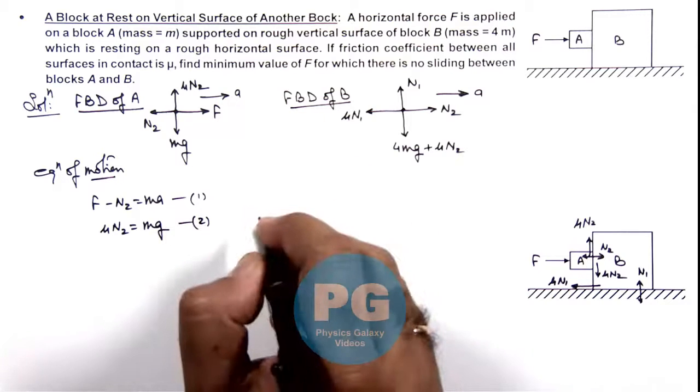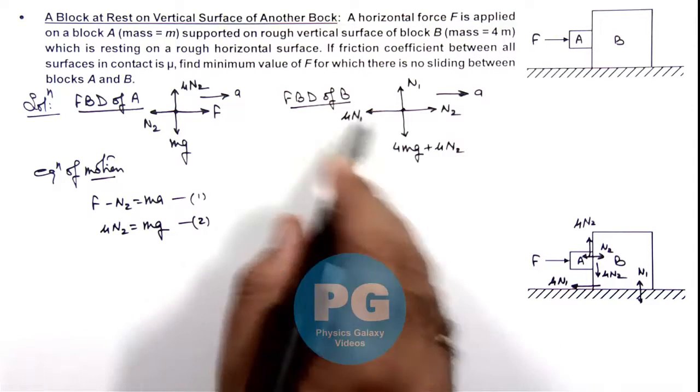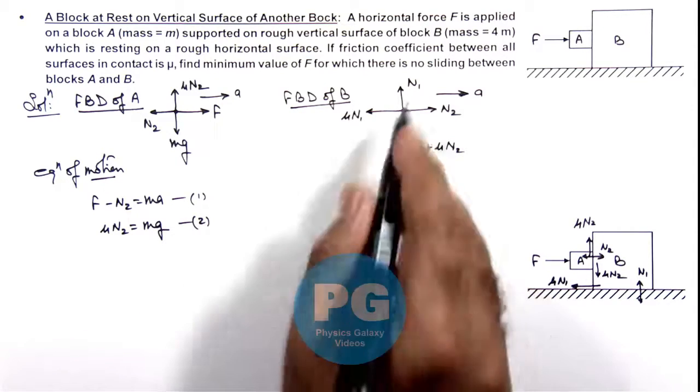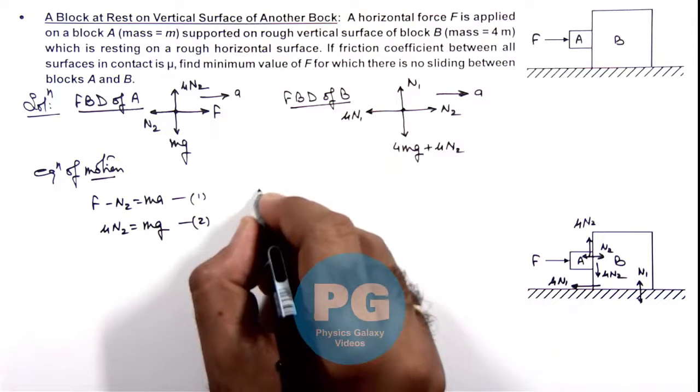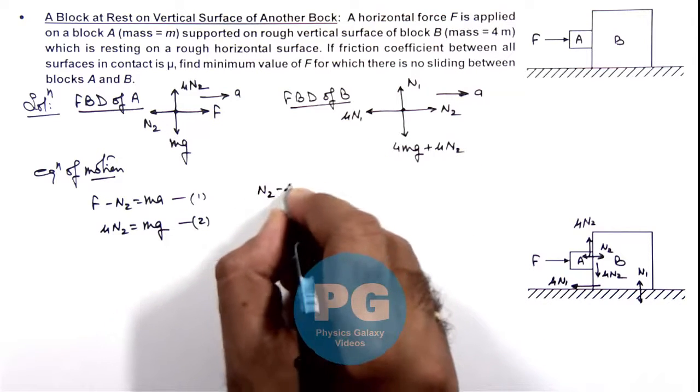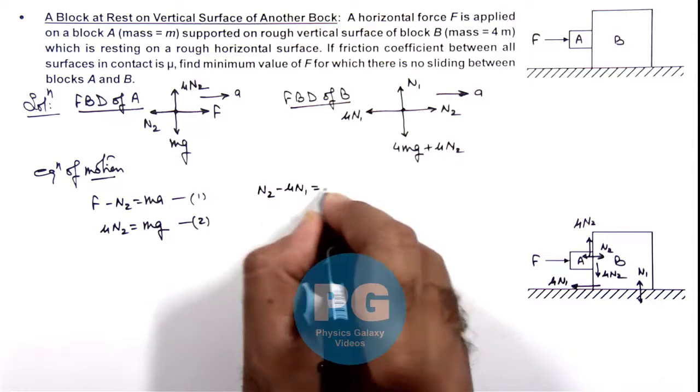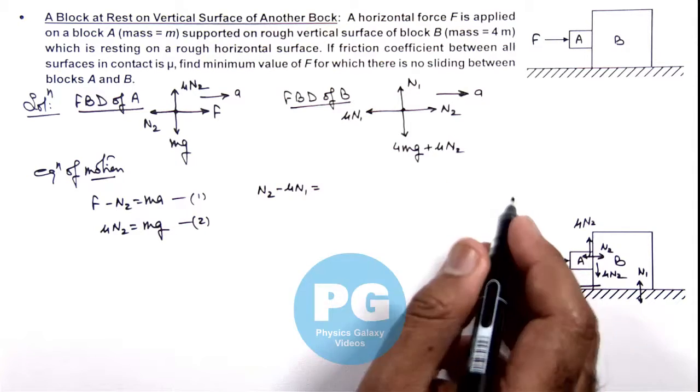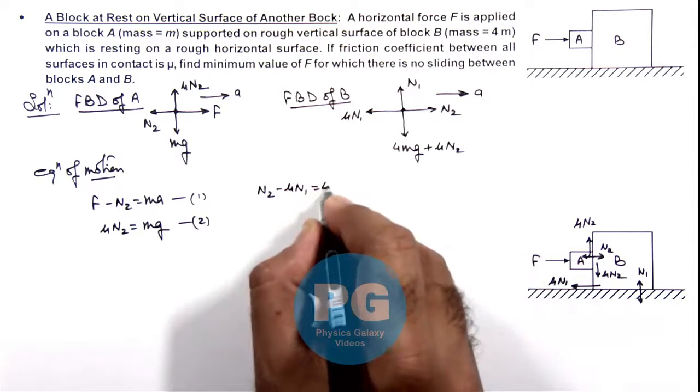And here if we write the equations for free body diagram of block B, as it is moving toward right we can write N₂ - μN₁ is equal to its mass is 4m, so this can be written as 4ma.